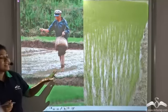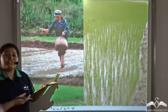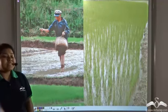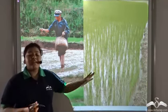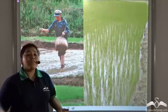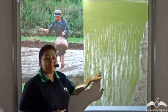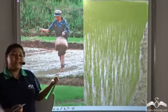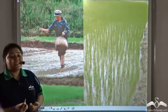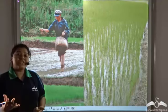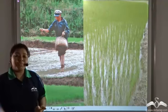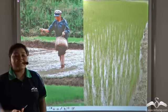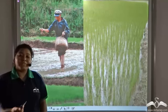Farmers scatter dry seeds on the field. In a few days, the entire field becomes green, full of these new seedlings. The process by which the embryo present inside the seed grows into a new plant under favourable environmental conditions is known as germination.